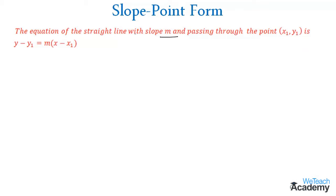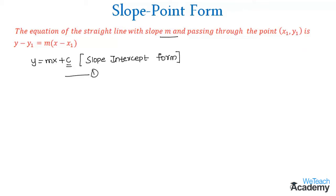We already know the equation of a straight line with slope m is y equal to mx plus c, according to slope-intercept form, where m is the slope and c is the y-intercept. Let us name this as equation 1. Given that this line passes through the point (x1, y1), this point must satisfy equation 1.